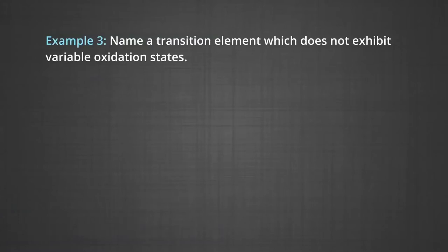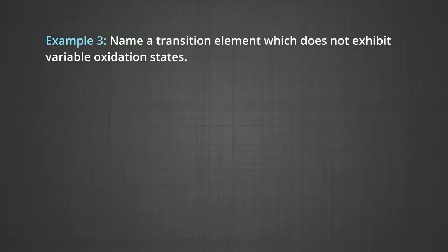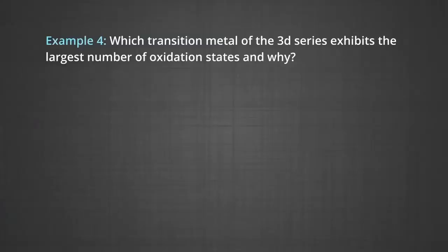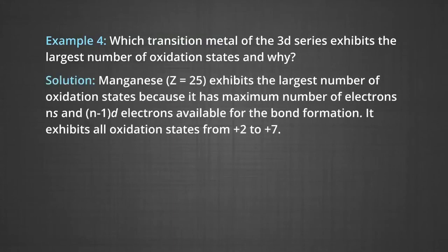Another question: Name a transition element that does not exhibit variable oxidation states. The answer is scandium (atomic number 21). It does not exhibit variable oxidation states. Additionally, manganese (atomic number 25) exhibits the largest number of oxidation states because it has the maximum number of ns and (n−1)D electrons available for bond formation, exhibiting all states from +2 to +7.